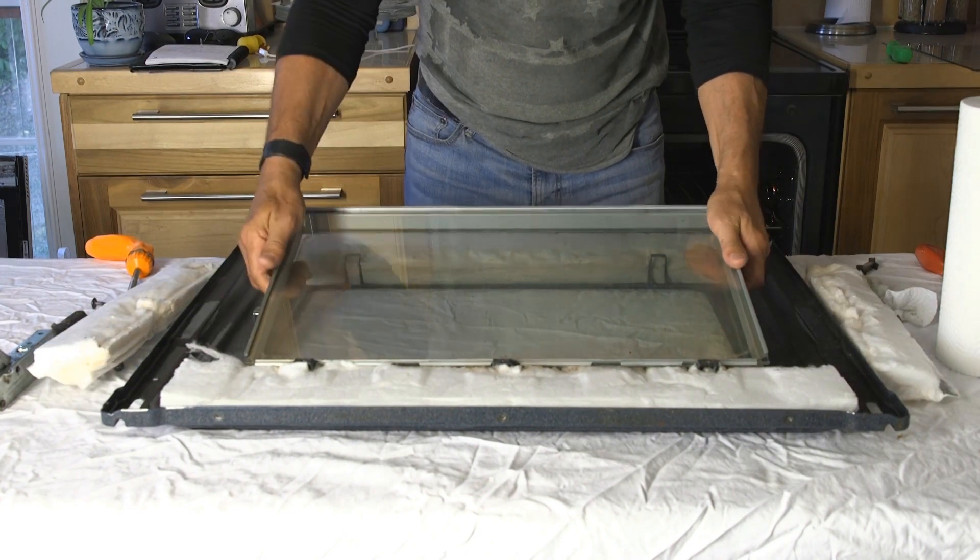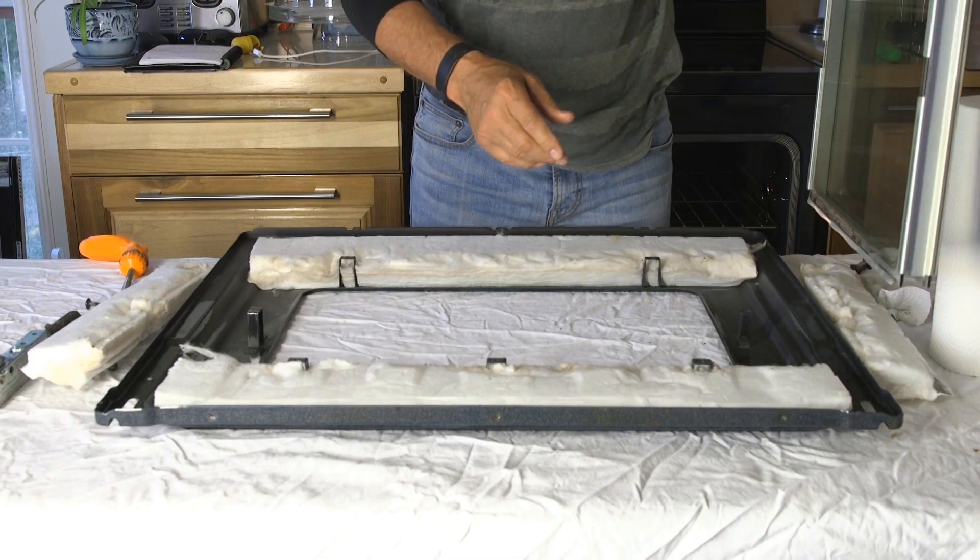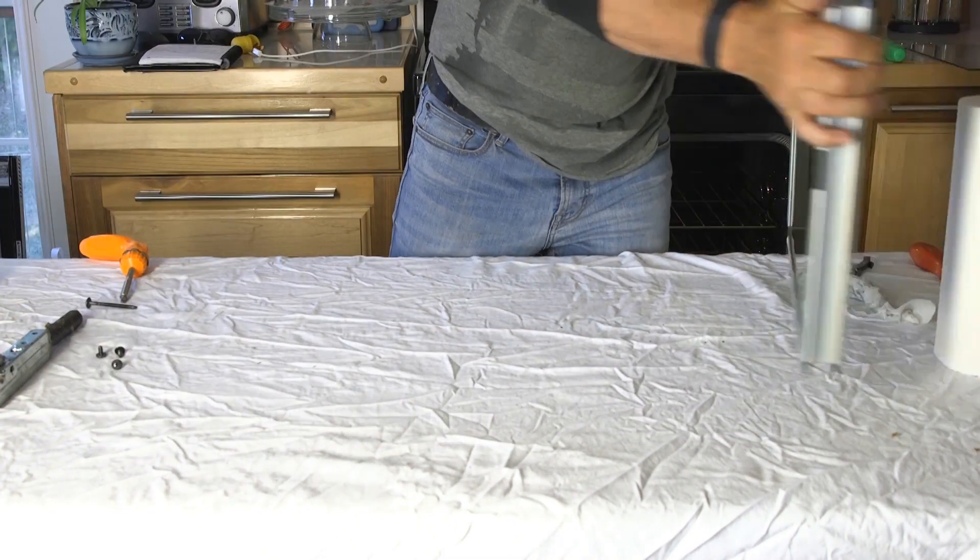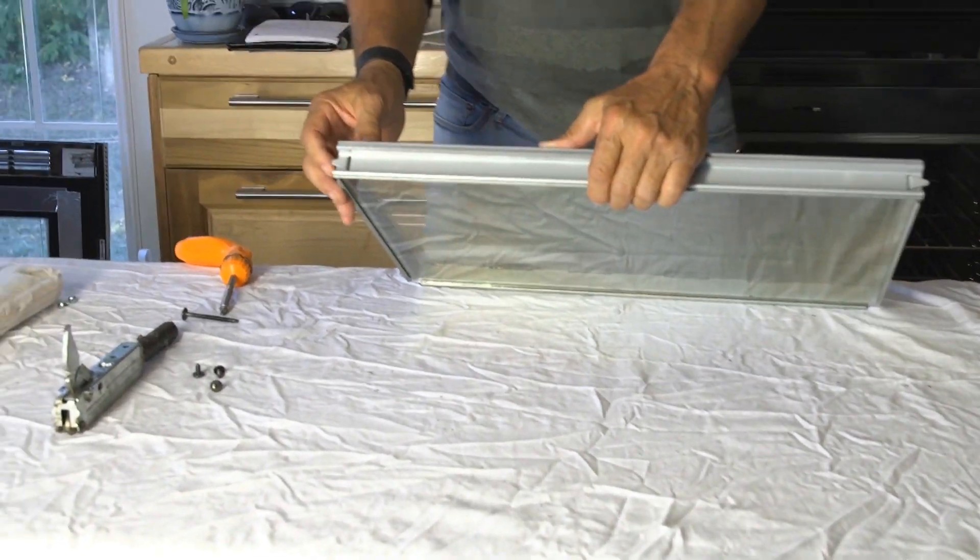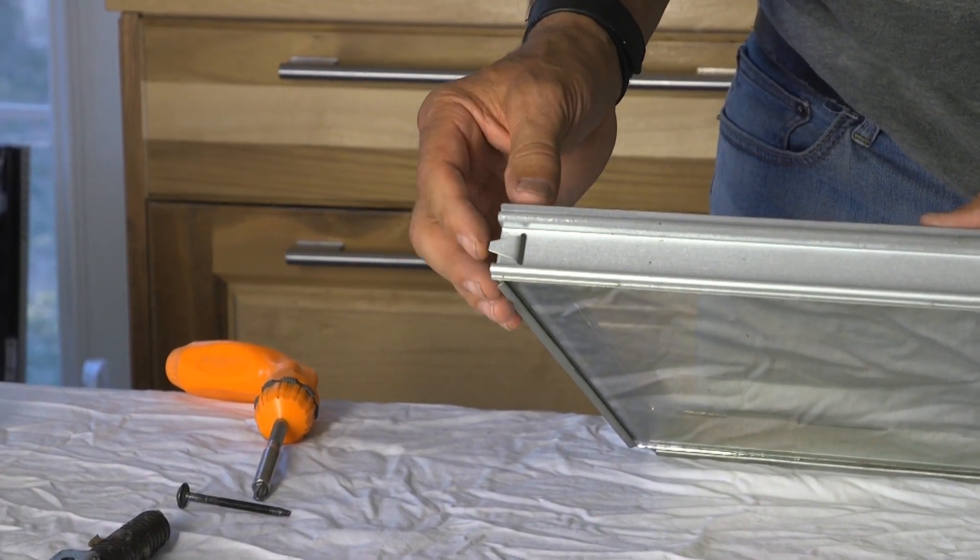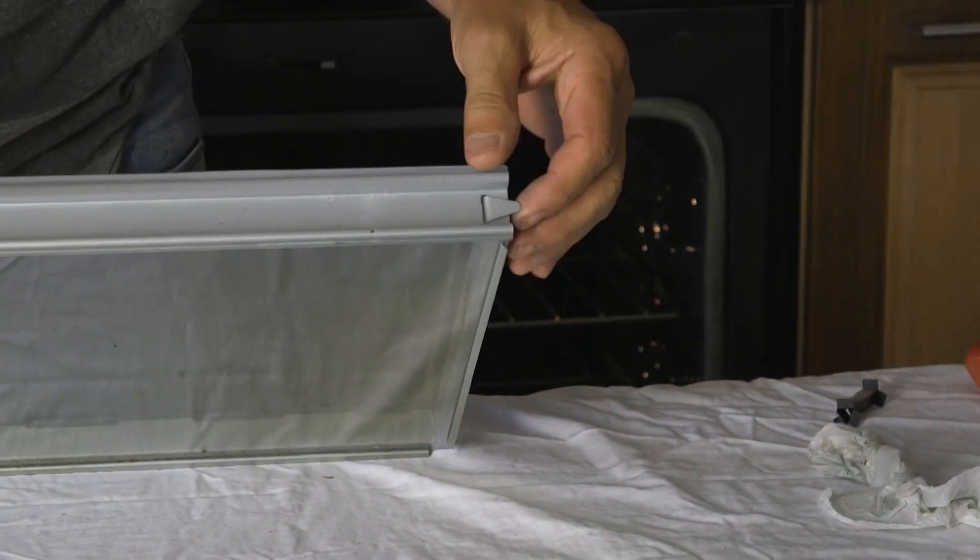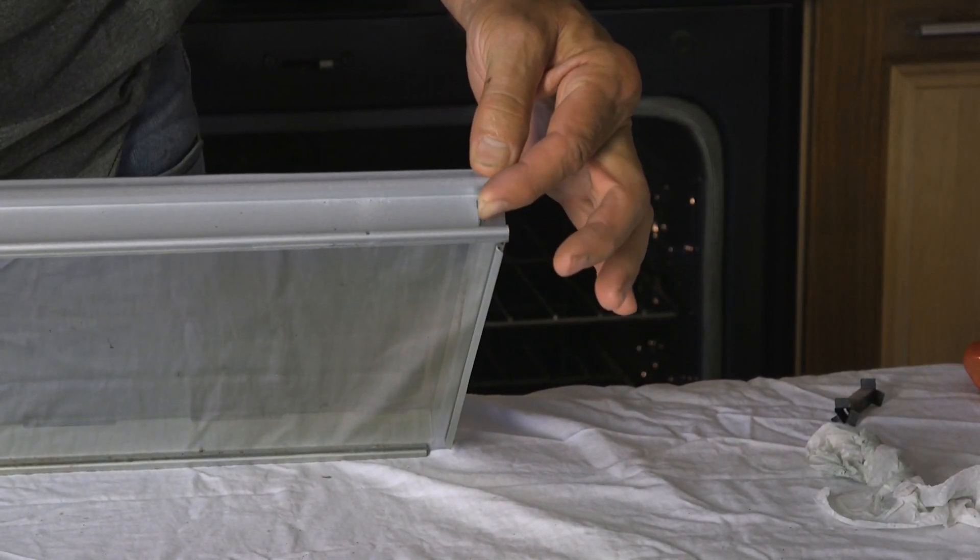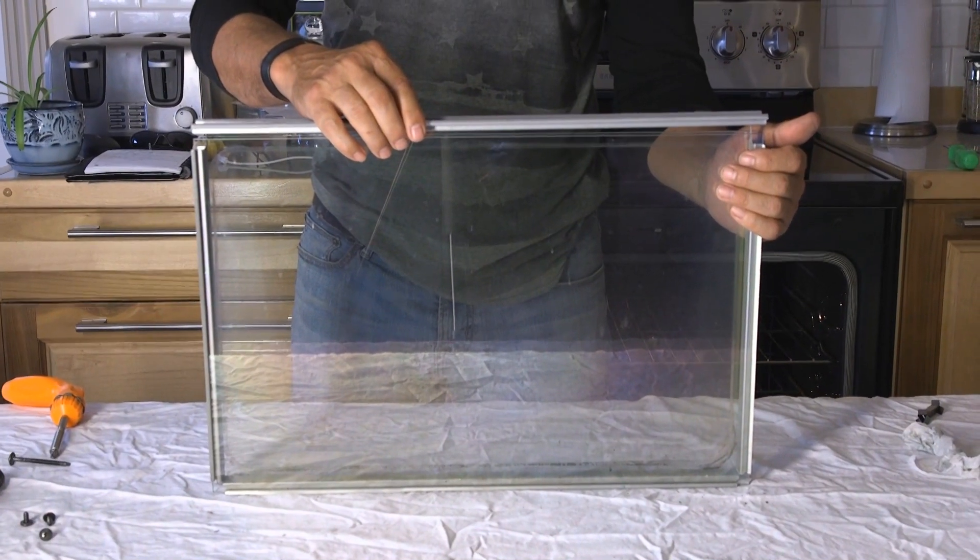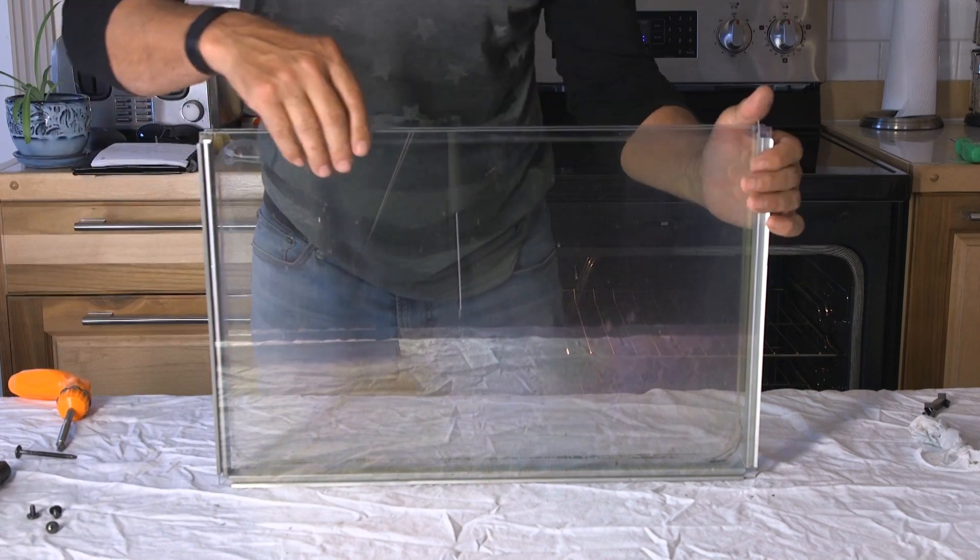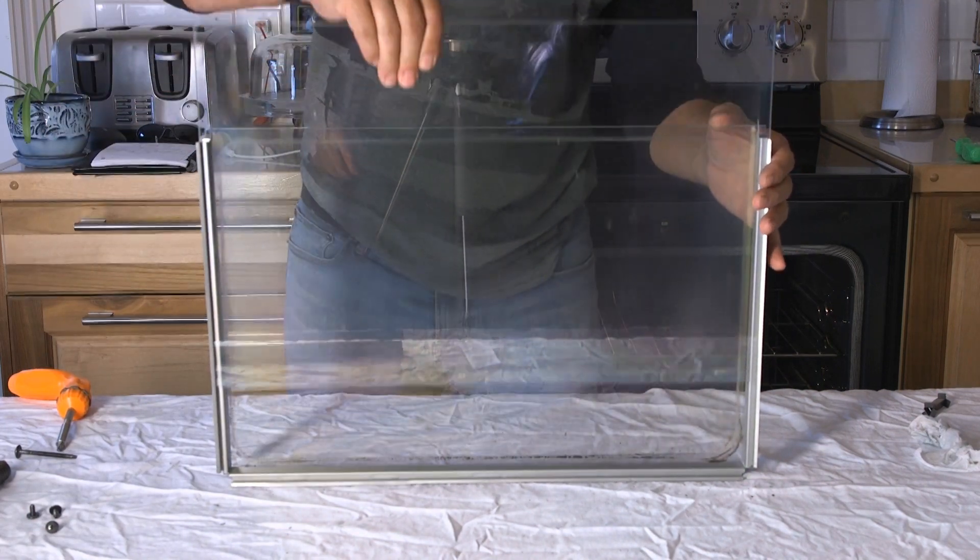Store away the back panel and bring back the glass assembly. There are 2 pins, one on each side. You just pull them up and remove the top bracket. Once it's removed, you can free the 2 last glasses.